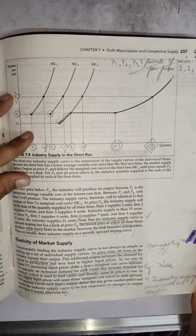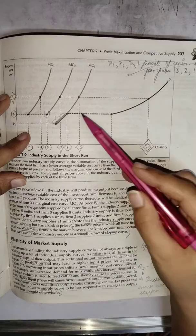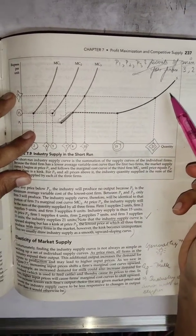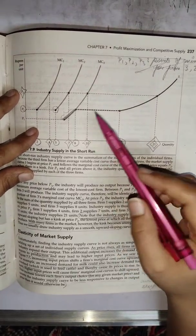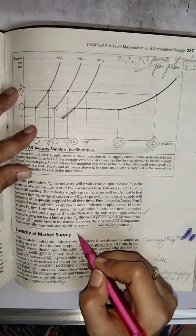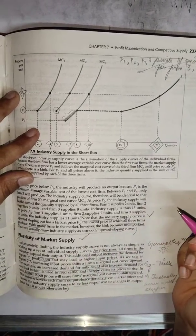In continuation of the topic where we determine the supply curve for the industry in the short run from the individual supply curves of the firms, we will now study elasticity of market supply.